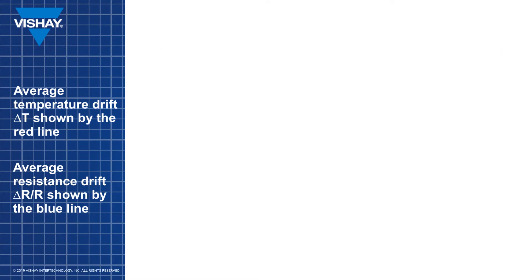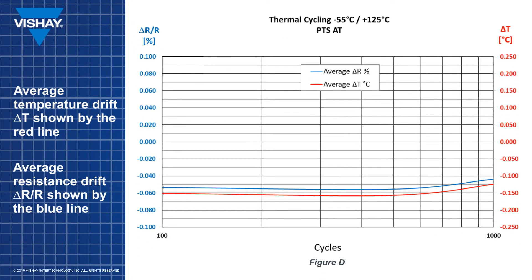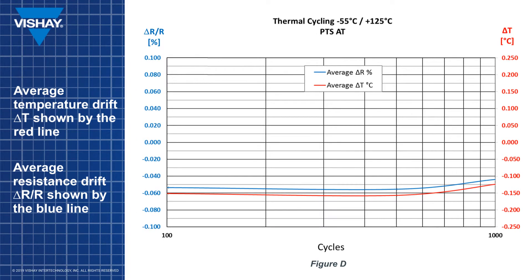When the PTS-AT is subjected to 1,000 hours of thermal cycling from minus 55 to plus 125 degrees C, the result is a higher temperature drift as is noted in figure D. However, by the majority of application standards or competing technologies, this magnitude of drift is still extremely low and the PTS-AT can be considered to be very stable.